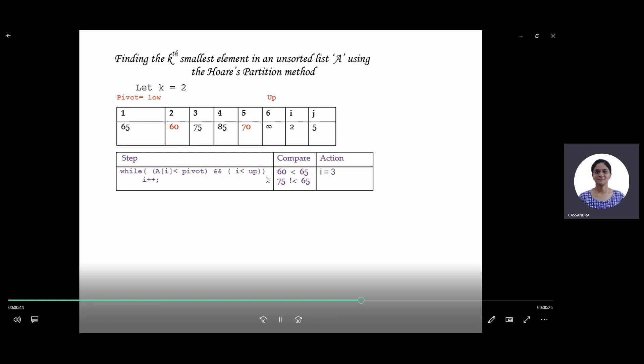Next, we continue checking if the value at i is less than the pivot, in which case we increment i and stop when we cannot.